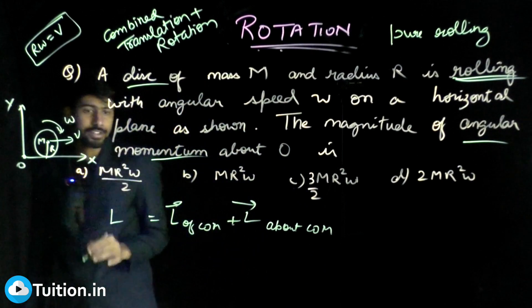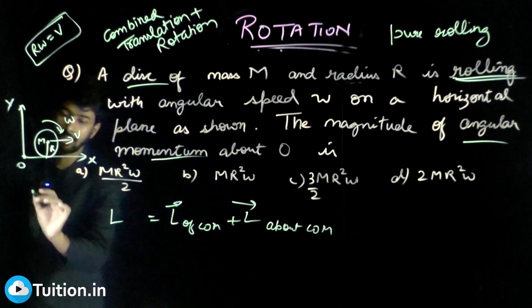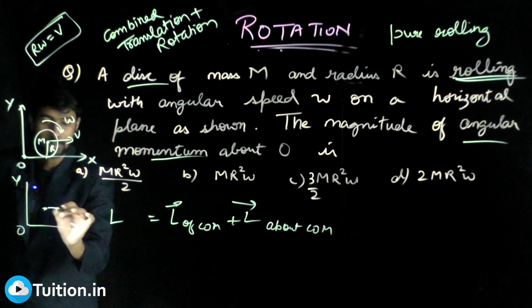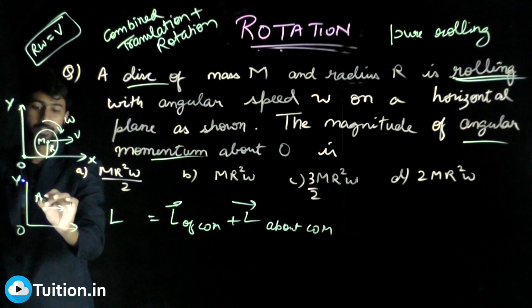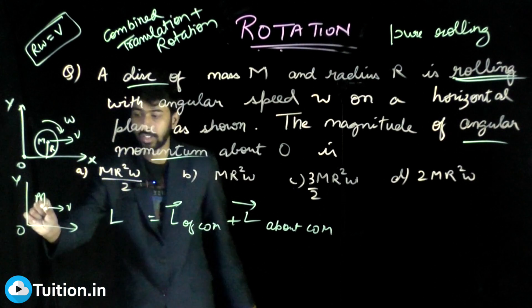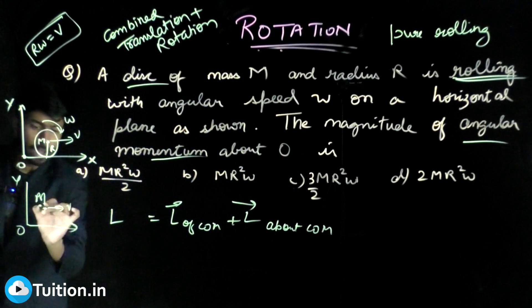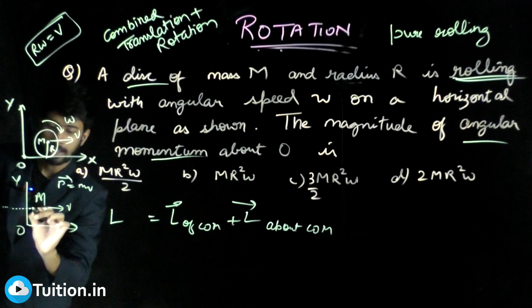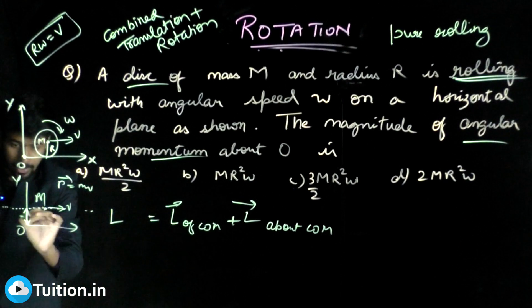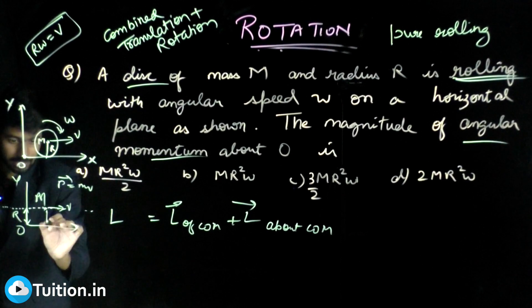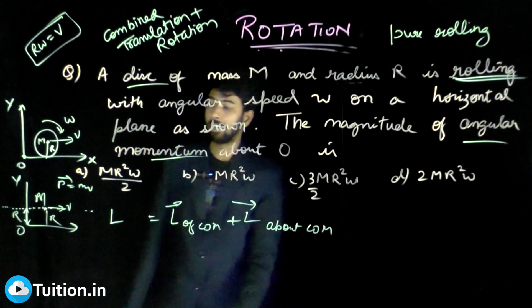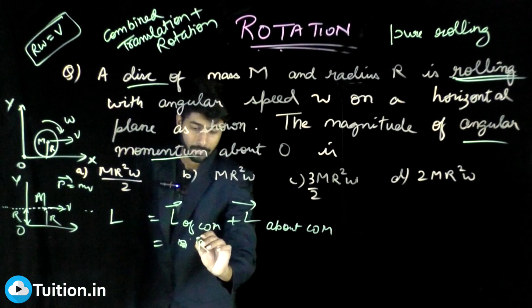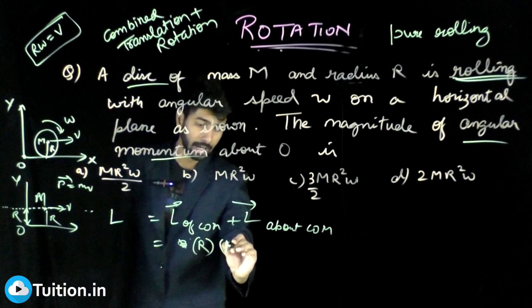What is L of center of mass? Forget that this is a disk — imagine it as a point mass at a distance r from O, moving with velocity v and having mass m. The momentum p equals mv is directed horizontally. Draw a line along p; the perpendicular distance r_perpendicular is simply r. So the angular momentum magnitude is m·v·r.